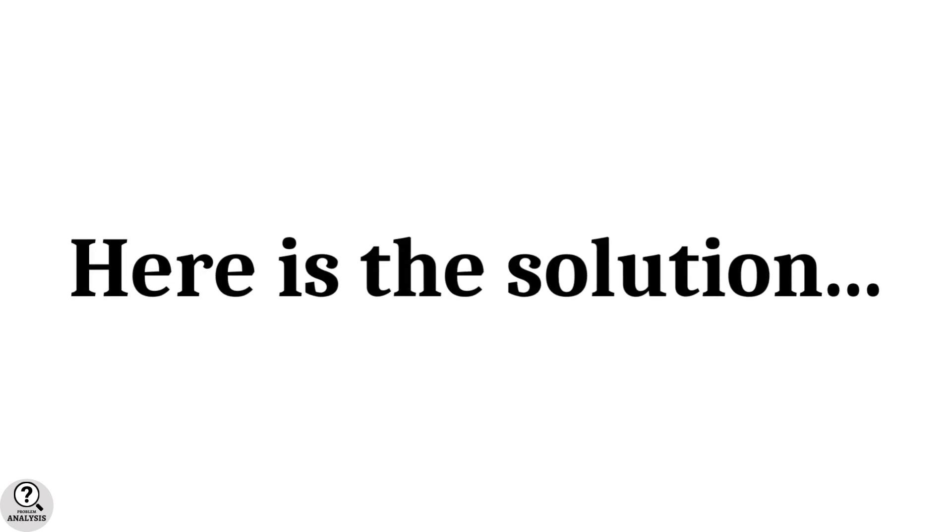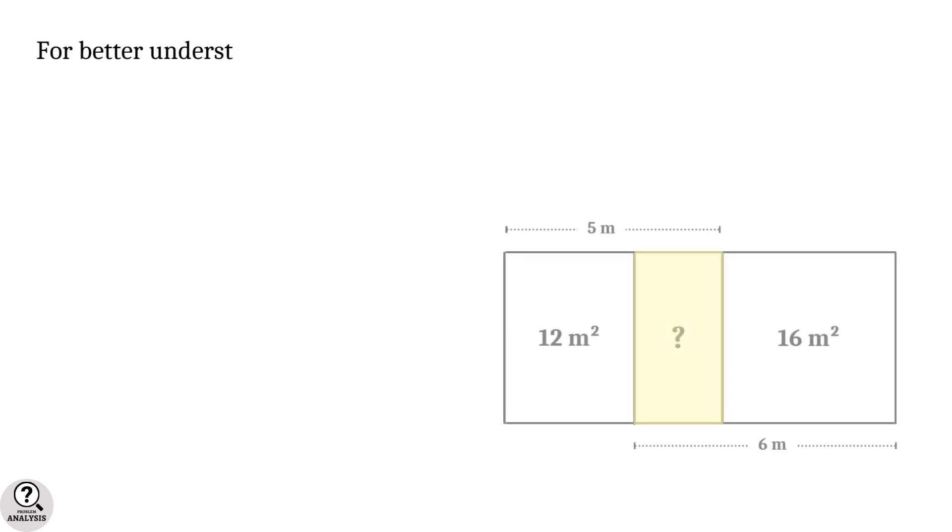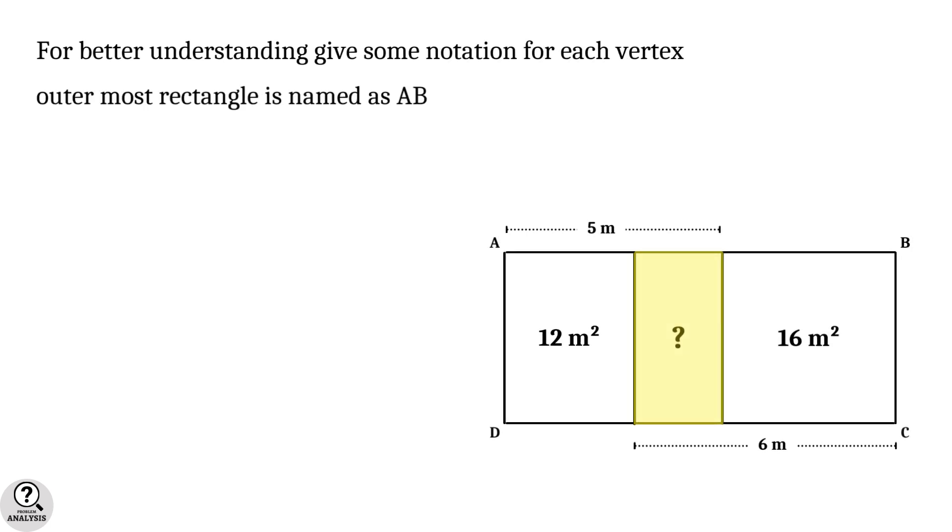And the solution is right here. Let's put some notations to each vertex. I am naming the outermost rectangle as ABCD and the inner yellow colored rectangle as PQRS.